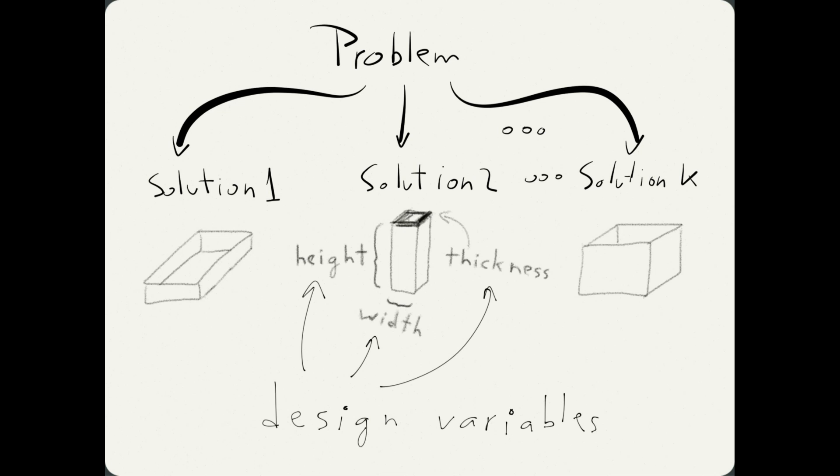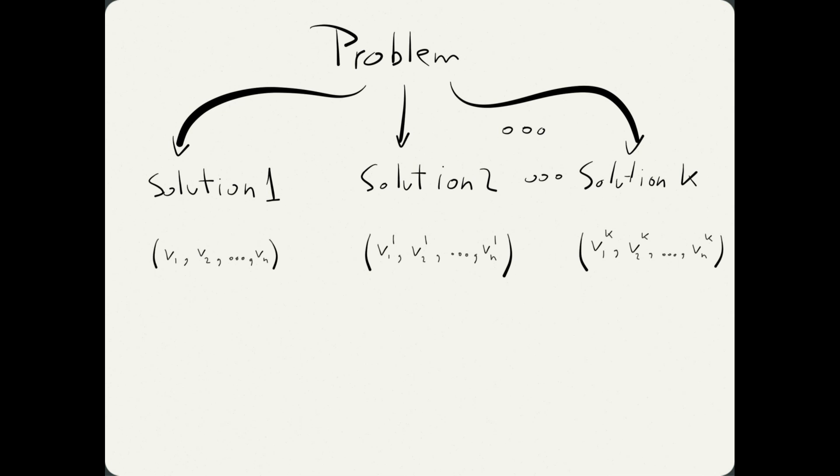Using the concept of design variables, we can represent each solution as a tuple whose elements are the values assigned to these variables. So the first element could be the height of the box, the second element could be the width, and the last element could be the thickness. If we have a total of n design variables, then each tuple will have n elements.